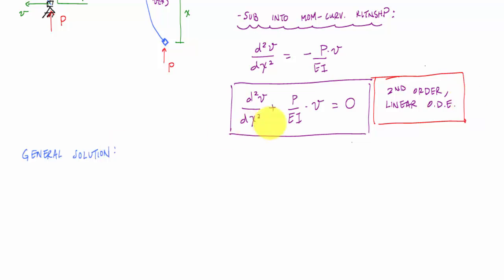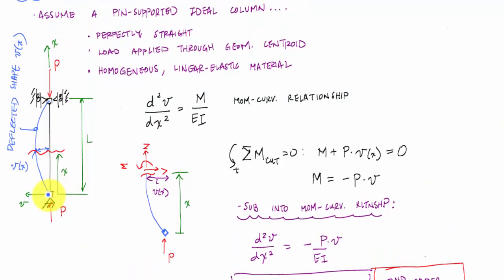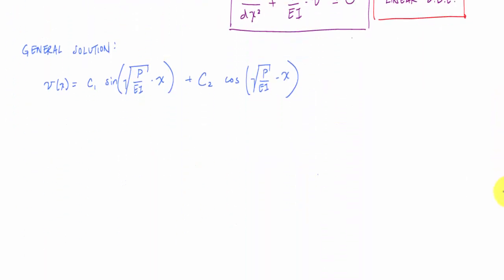The general solution to this ordinary differential equation will have the form V of X. And we're going to have two constants, C1 and C2, that we need to solve for. To solve for those constants, we're going to need to use our boundary conditions of our column. The displacement at zero, V of zero should be equal to zero. And then the displacement here at the end, V of L should also be equal to zero. So when I apply this V of zero equals zero, I would find that C2 equals zero. I substitute zero, sine of zero is zero, cosine of zero is one, C2 equals zero.